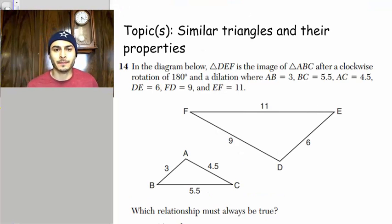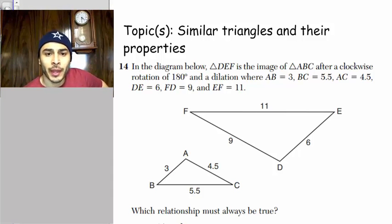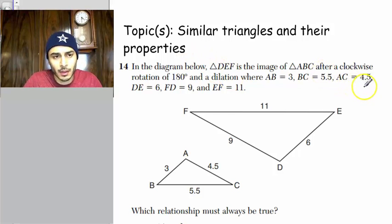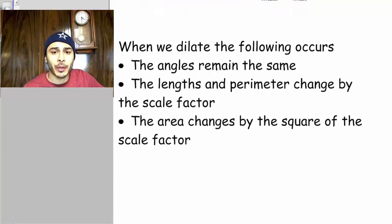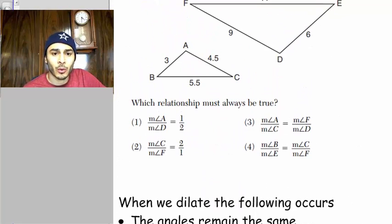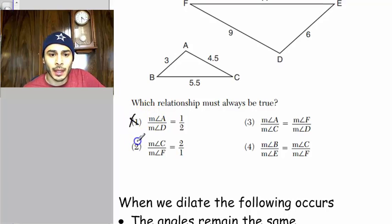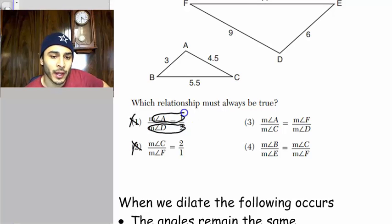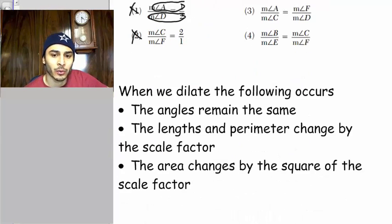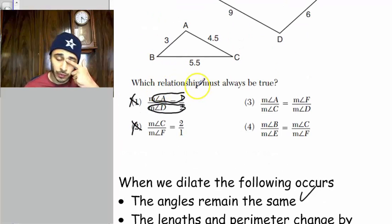So number 14, we have two triangles, and we are told that originally we had one, and then the other one is the result of a rotation and a dilation. Which relationship must always be true? All right, so look, I wrote these down. When we dilate, the following occurs. The angles remain the same. So choice 1 and choice 2 are out of the question, because choice 1 is saying that angle D is twice the measure of angle A. That's just not true because the angles remain the same.